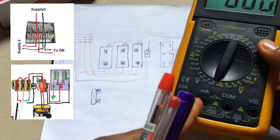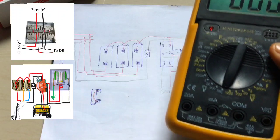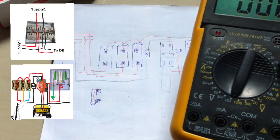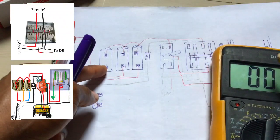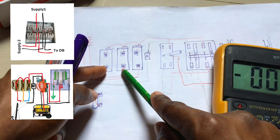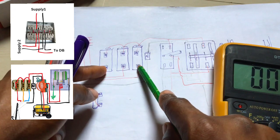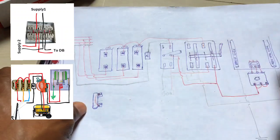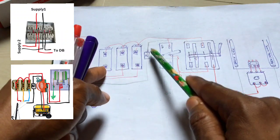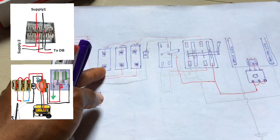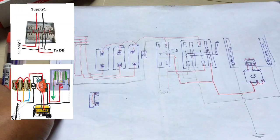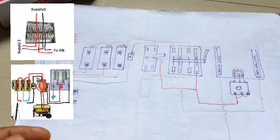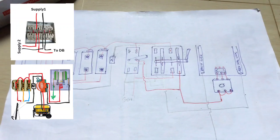Make sure your meter is set to the highest range, because three-phase voltage is usually 280 to 300 volts and above. If you test between two hot lines you get very high voltage — that is for industrial purposes only. If you test any hot terminal against neutral you get around 200 to 220 volts. Some countries use 120 volts but in my country we use 220 volts.